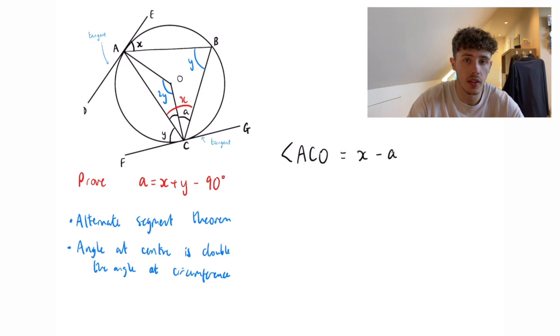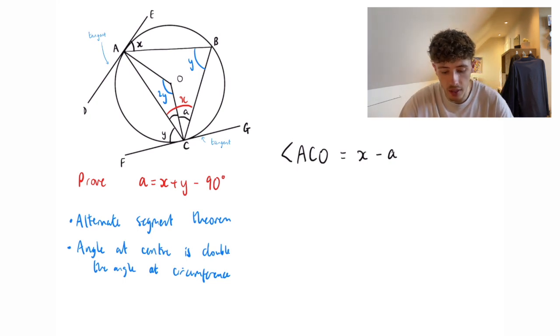that's actually an isosceles triangle because AO and OC are both the radius of that circle. So that must mean that CAO is also equal to x minus a.